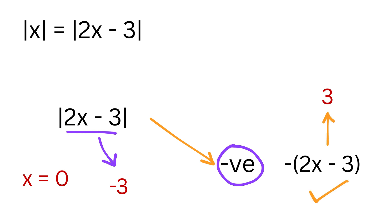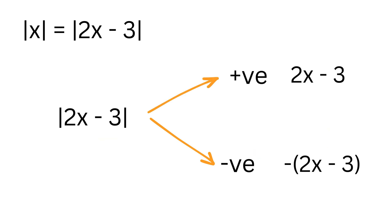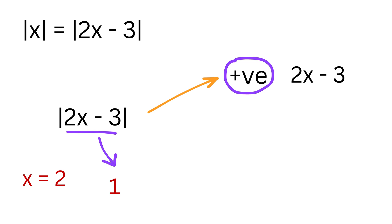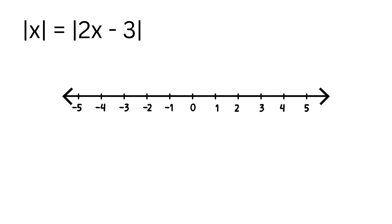That gives plus 3 when we put x equals zero. On the other hand, if x equals 2, then 2x minus 3 equals 1, which is positive — in that case the absolute value of 2x minus 3 just stays the same and gives 1. This is why when solving equations with absolute values, we always split the number line into regions depending on where the inside turns from negative to positive.